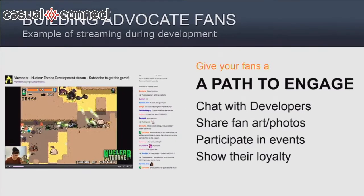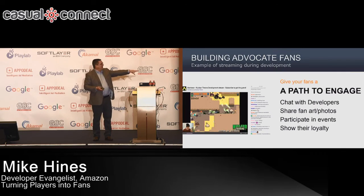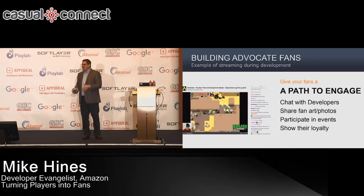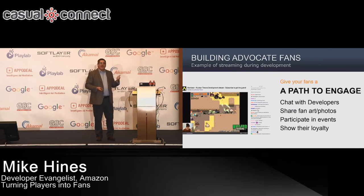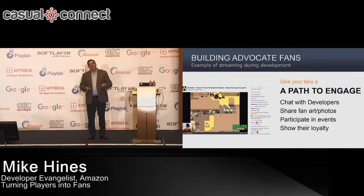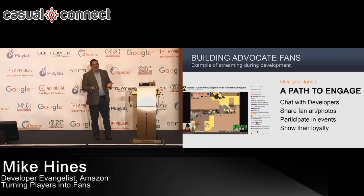Let's look at another kind of influencer — entertainers, professionals. First, let me give you a quick path to engage: how do you turn a fan into an influencer? Give them a clear path to engage. When Vlambeer was developing Nuclear Throne, they did the development on Twitch, and fans of their previous games started watching their current game being developed. When they launched, they already had a thousand fans who had skin in the game. Make sure fans have an opportunity to share their art, participate in events, and show their loyalty — give them something to say, 'I'm a fan of this game.'